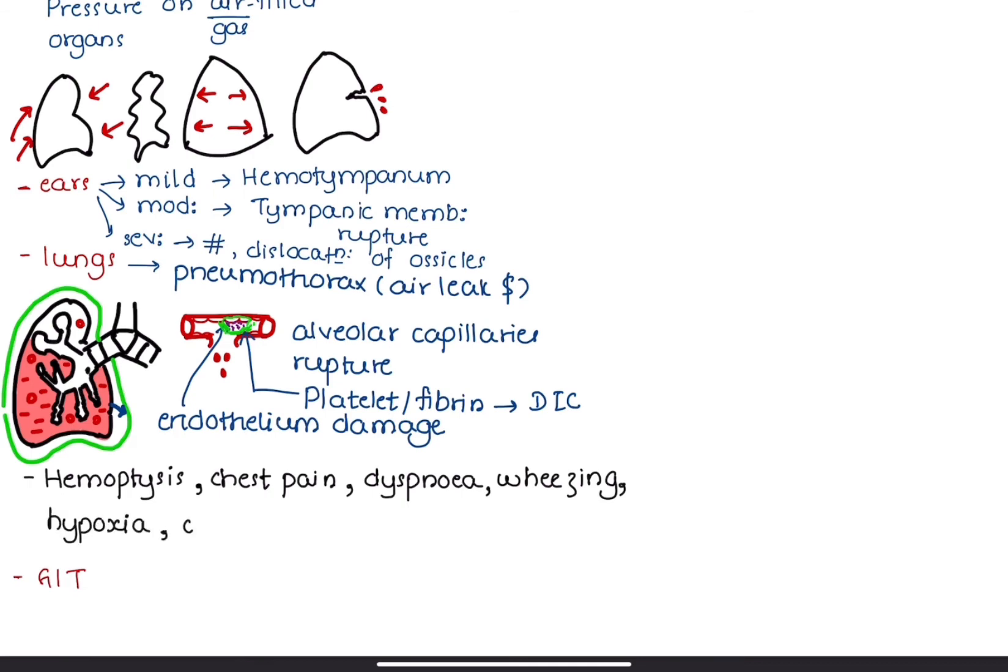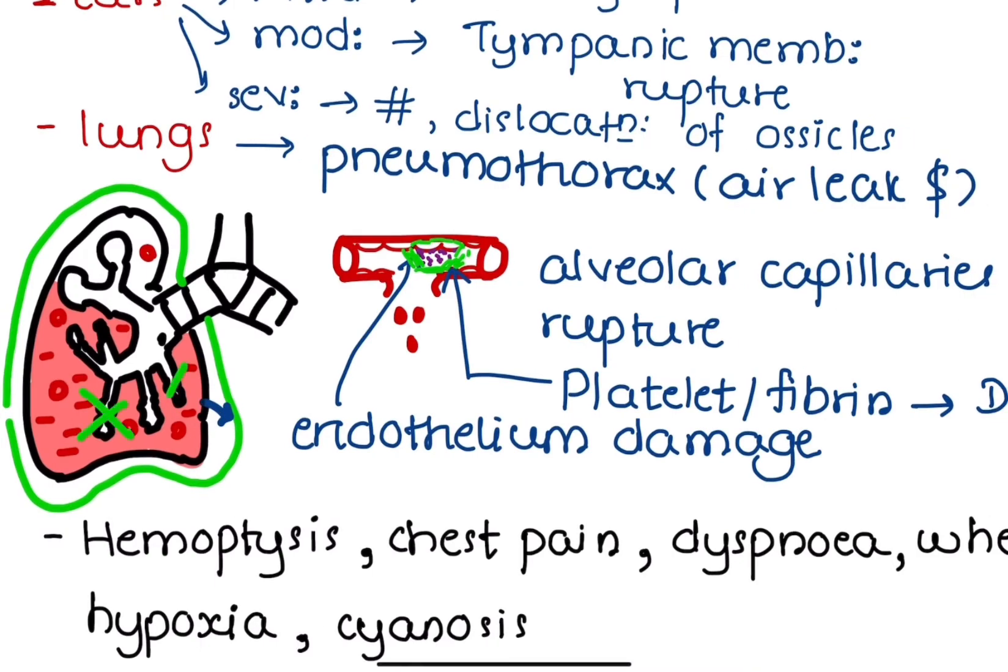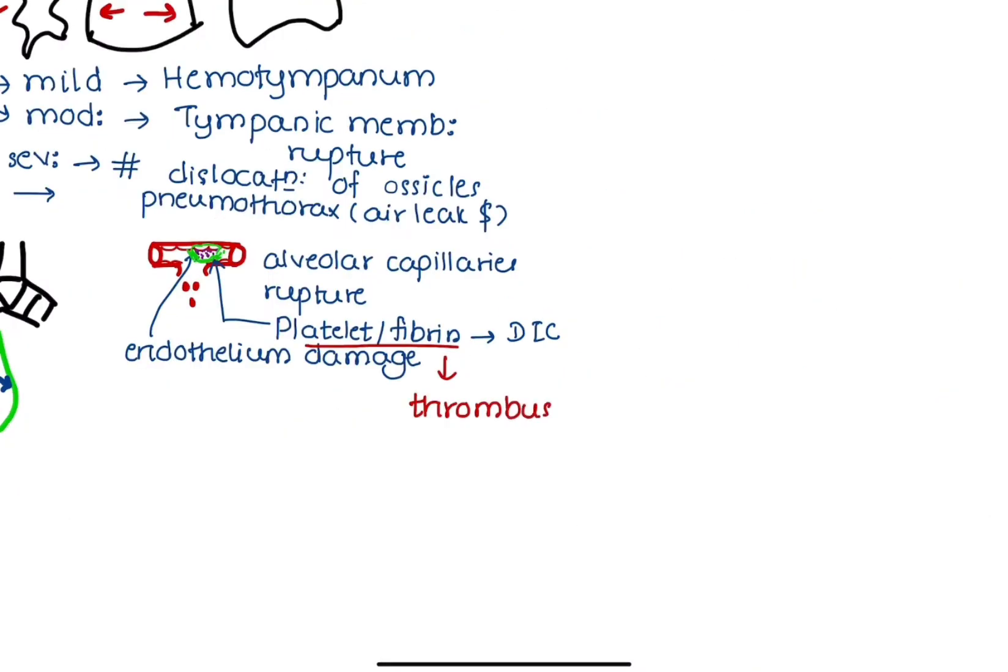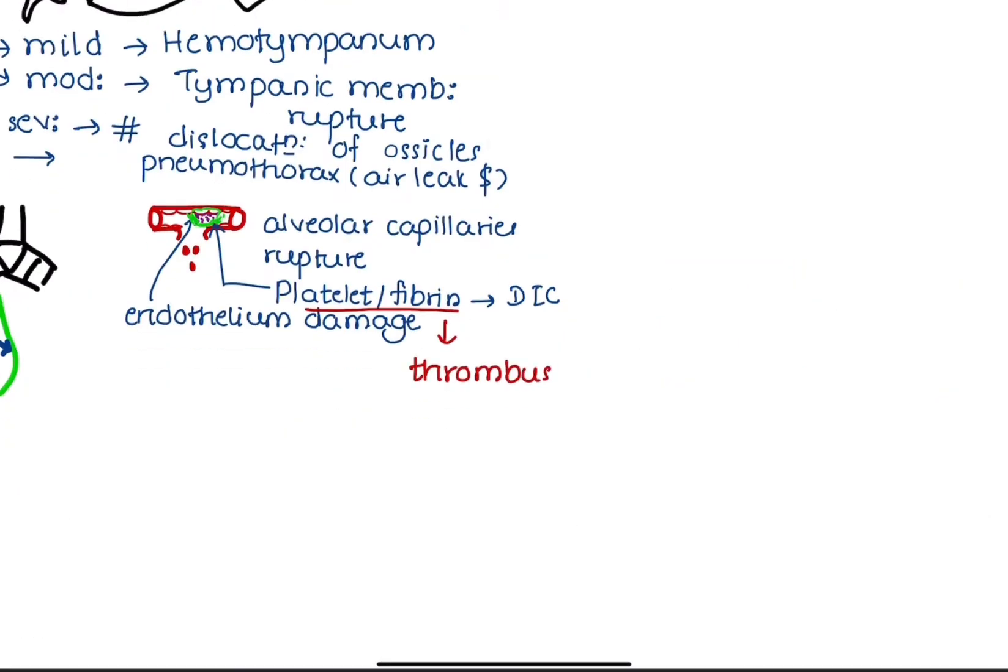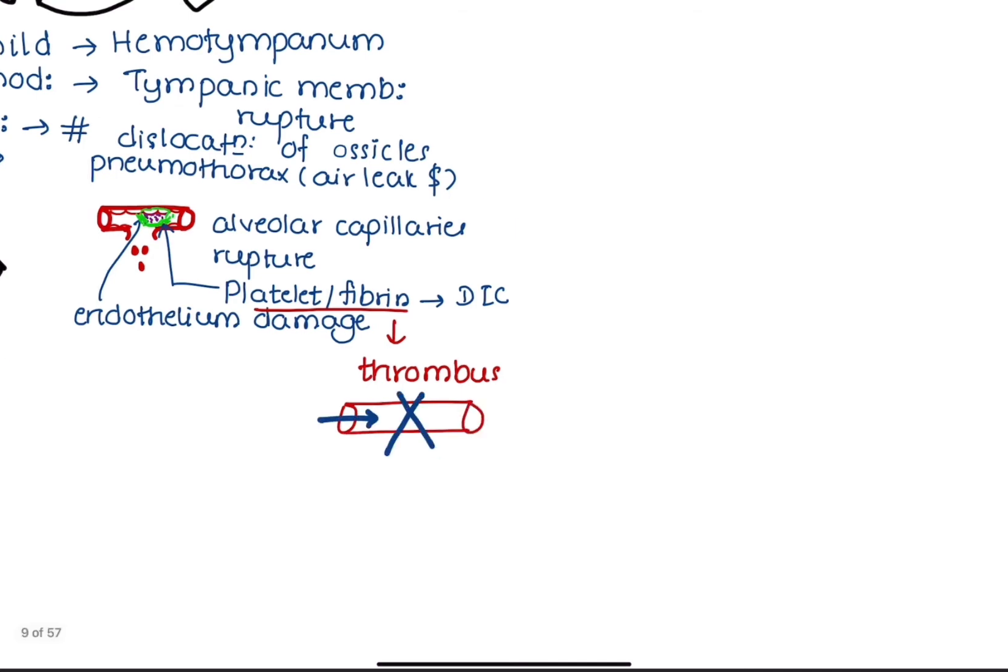These pathologies result in hypoxia, cyanosis, and potential for respiratory failure. Formation of platelet and fibrin plug leads to impotence of blood flow, causing ischemia.